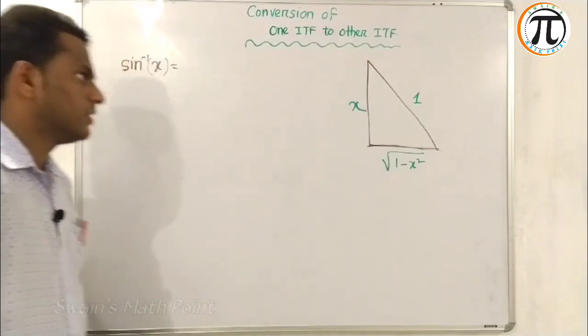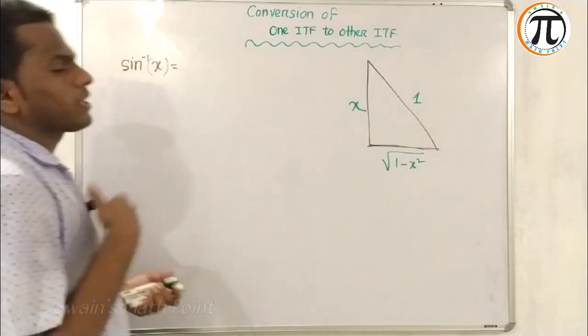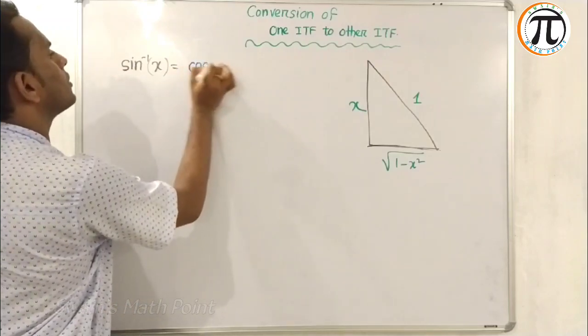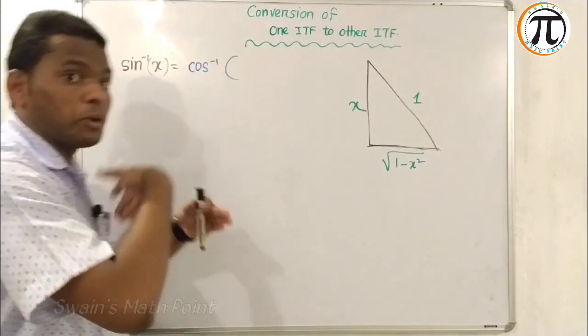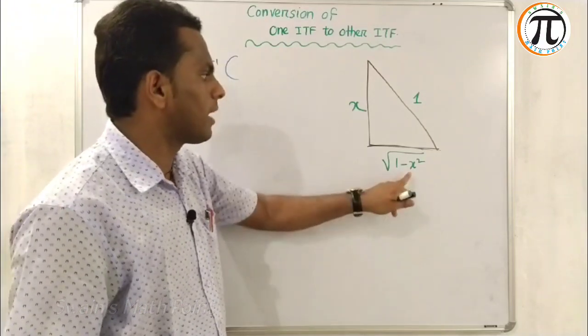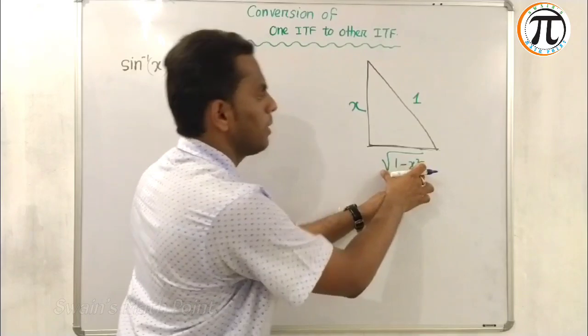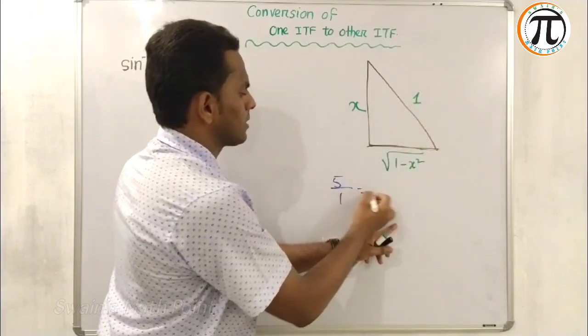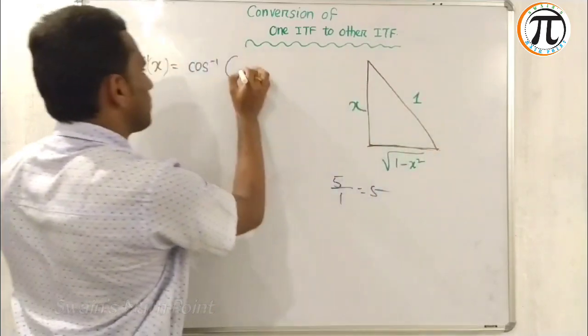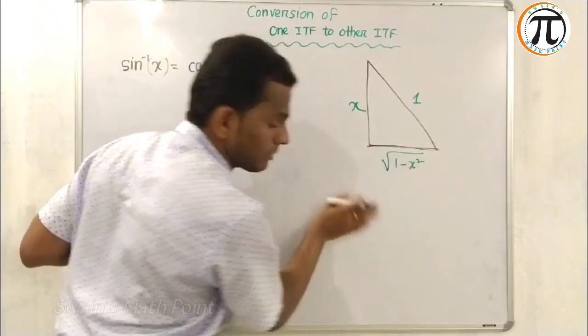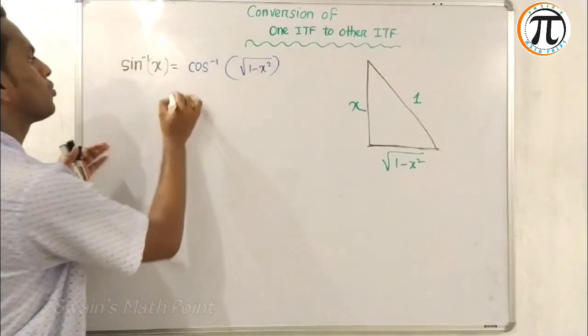Now I convert to cosine. Sine inverse X is converted into cosine inverse. Cosine formula is B by H. B by H equals this by 1, which simplifies to square root of 1 minus X squared.